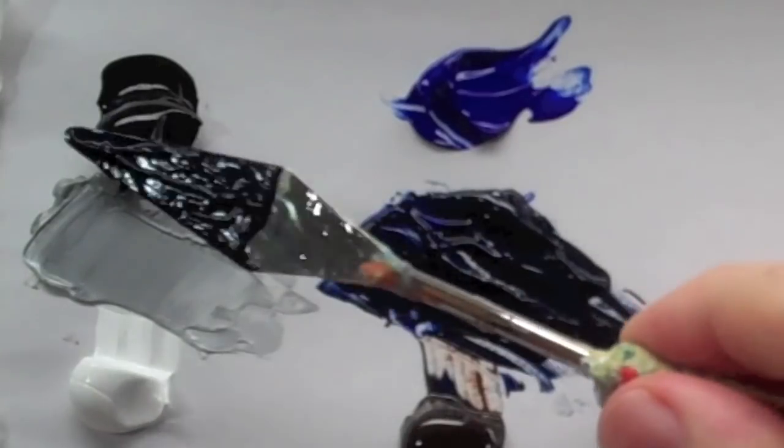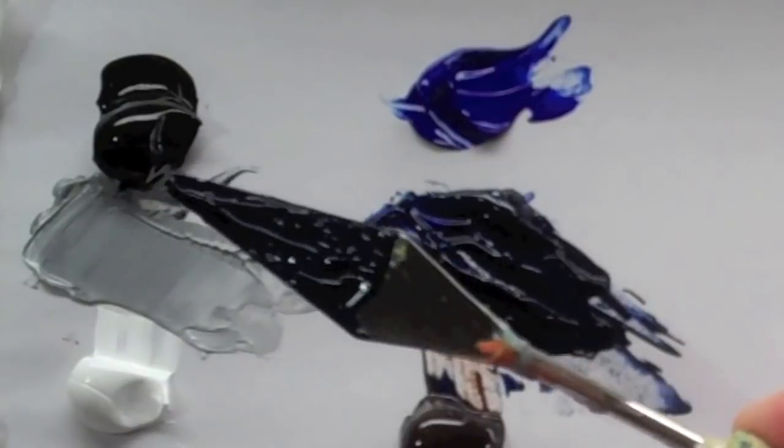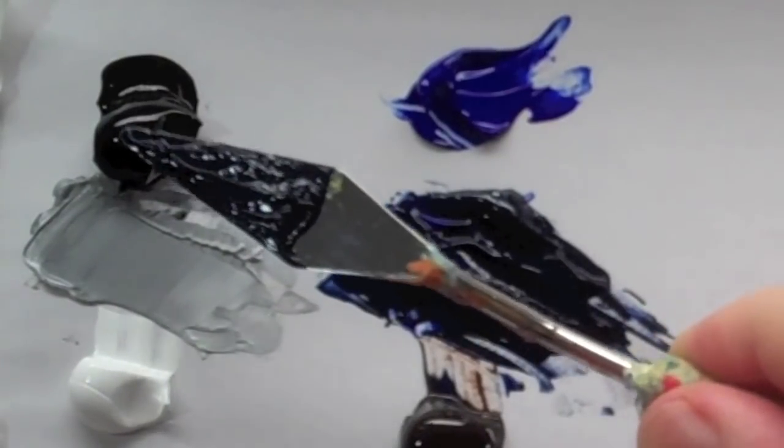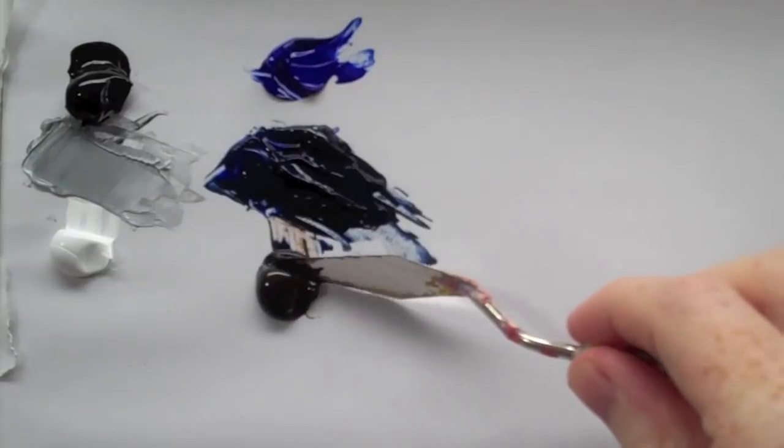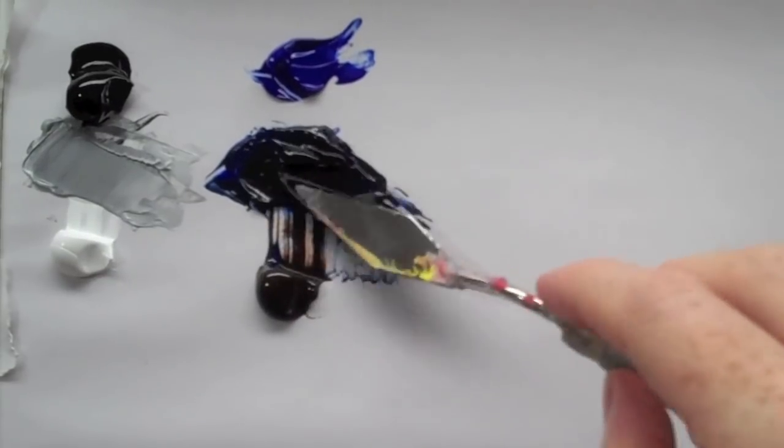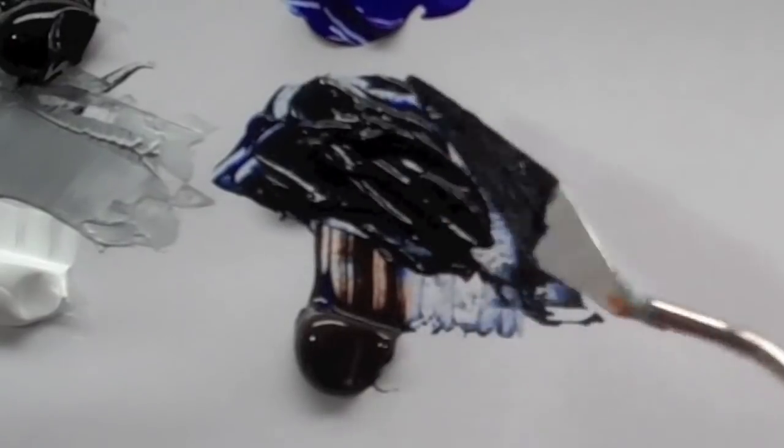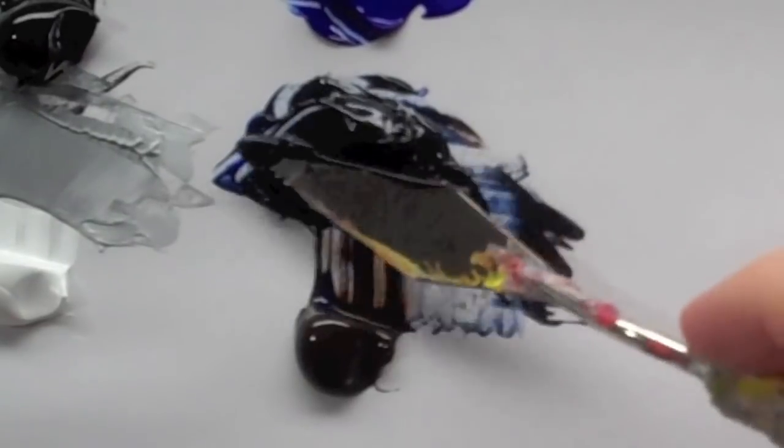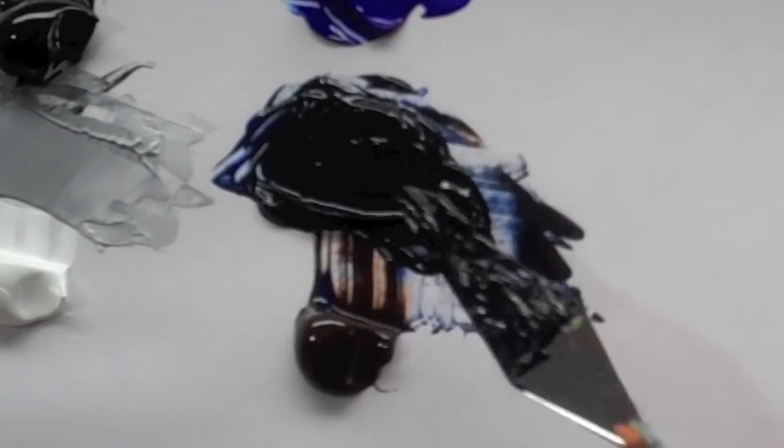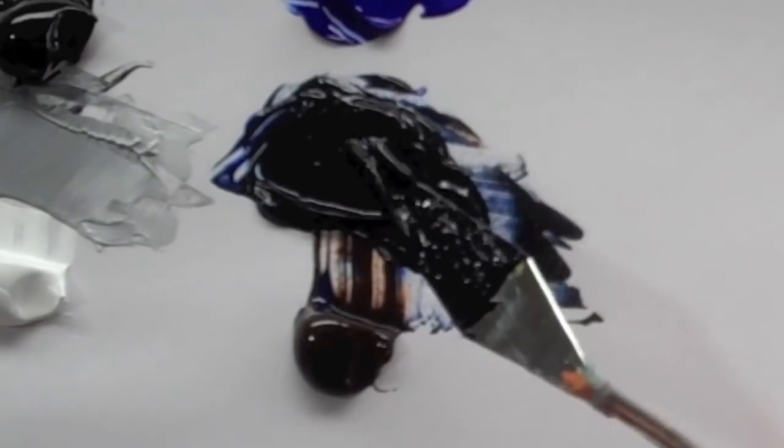So when I compare those two, I can still see the underlying blue in this one compared to the black of that, so I will add a bit more of the burnt umber. And that is about as black as we can go with these colors.